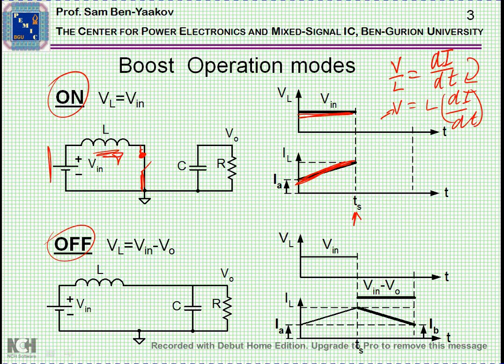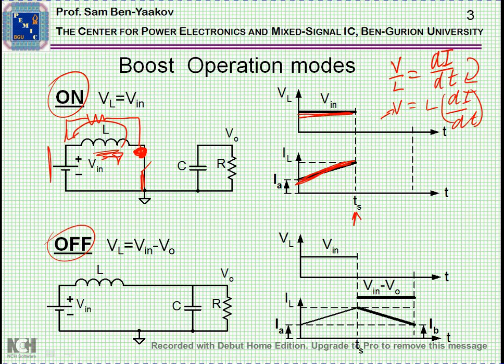That is, a high voltage will develop here. The question is, what's the polarity of the voltage? There is a very simple way to find it out. We put an imaginary resistor here. And since the current is looking for a way to pass, here is the way it will go — the continuity of the current. And we then understand that since the current is going through the resistor in this direction...